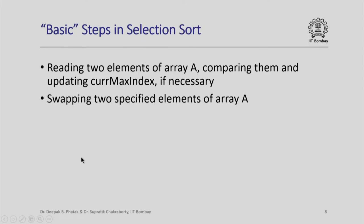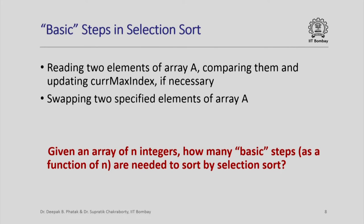Looking at these functions, the basic steps in selection sort are: read two elements of the array a, compare them, and update current_max_index if necessary — this is what find_index_of_max does at each step. And of course the swap function swaps two specified elements of the array a. So these are my basic steps in selection sort. Given an array of n integers, how many basic steps as a function of n are needed to sort this array by selection sort? That is what we are going to do in today's lecture.